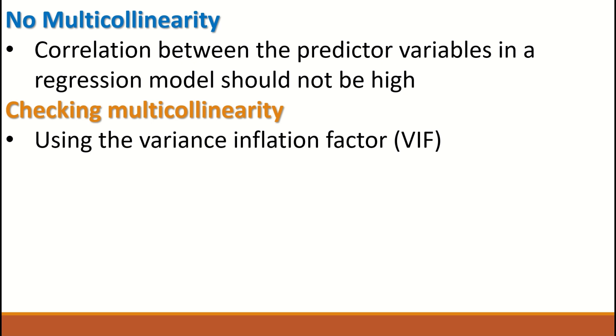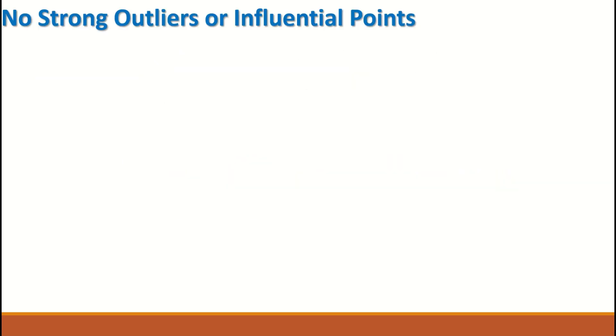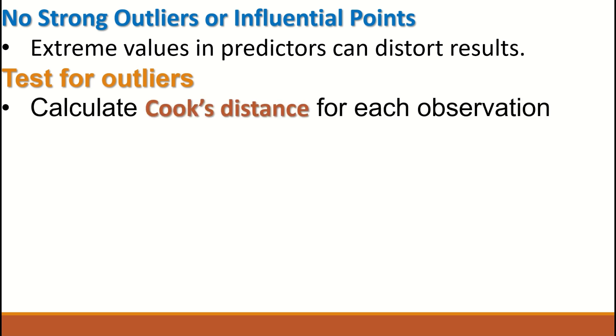The fifth assumption is that there are no outliers. An outlier is an extreme high or low value within the data, so no strong outliers or influential points. These outliers are extreme values in the predictor which can distort the result. How do we test for outliers? By calculating Cook's distance for each observation.